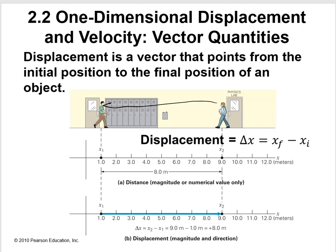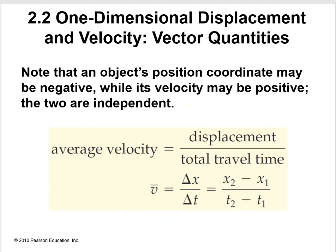This person would go negative 8 meters. She would go from 9 to 1, so she would have covered negative 8 meters. So we now have a displacement because it's giving us a distance and a direction because we're indicating that this over here is positive and over here would be negative. Note that an object's position coordinate may be negative, while its velocity may be positive. The two are independent of each other.